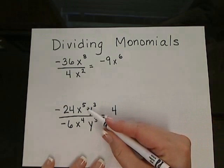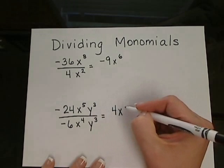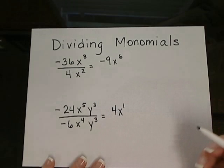Now I'm ready for x to the 5th divided by x to the 4th. That would be x to the 1st when we subtract those exponents.